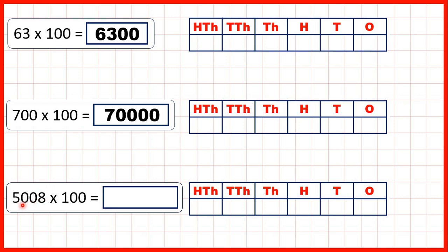So now we have 5008 times 100. That's 500,800, so 5008 with two zeros on the end, and we can do that because 5008 times 1 is 5008, and if we have two end zeros in the question, we have two end zeros in the answer.